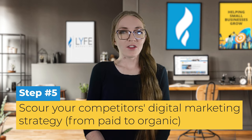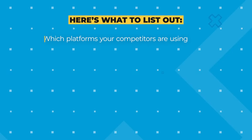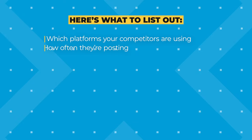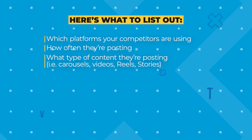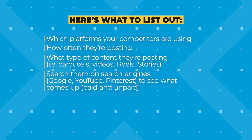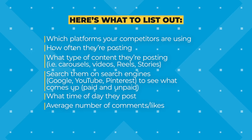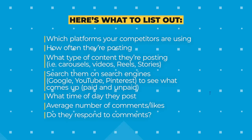Next, scour your competitor's digital marketing strategy, from paid to organic. You'll notice that some of these steps overlap — you're completing a number of them at the same time, so don't worry about keeping them strictly in order. You'll spend time on your competitors' social media channels. Most businesses list their social profiles on their website, but you can also manually search the most popular platforms. I list all of my competitors and the platforms they're using, how often they post and what type of content — carousels, videos, reels, or stories. I find them on search engines like Google, YouTube, and Pinterest to see what comes up, looking for paid and unpaid content. I also pay attention to the time of day they post, note the average number of comments and likes, and make note if they respond to comments and what the tone of those responses are.